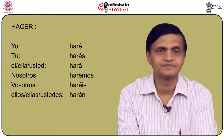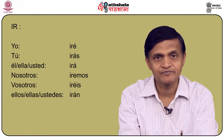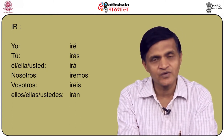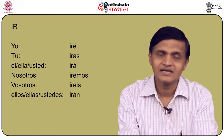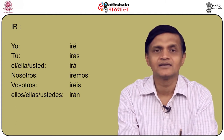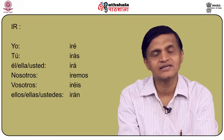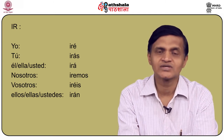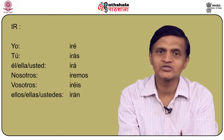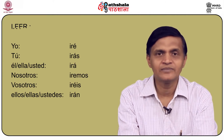How do we conjugate the verb ir, which is also a very important verb and it is always irregular in all its forms? Ir in the future is conjugated in the following manner: yo iré, tú irás, él/ella/usted irá, nosotros iremos, vosotros iréis, and ellos/ellas/ustedes irán.